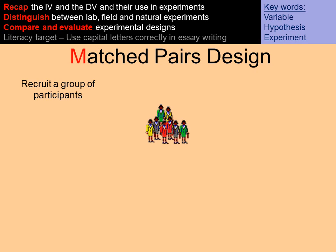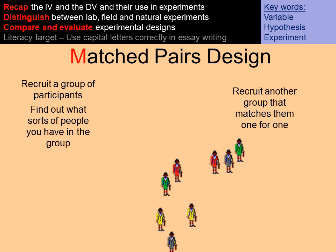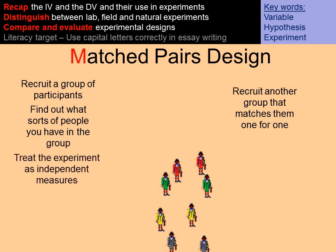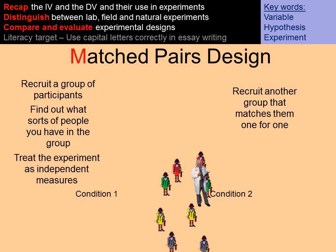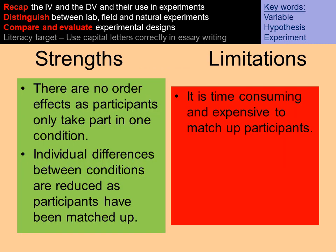The last design is matched pairs. You recruit a group of participants, assess their characteristics, then recruit another group and match them to your original group — this might be for IQ, age, or gender. You then assign one matched group to condition one and the other to condition two and compare results. This is good because there are no order effects since each participant only takes part in one condition, and individual differences are controlled through matching. For example, if participant one has an IQ of 79, the matched participant in condition two will also have an IQ of 79, ensuring intelligence isn't a confounding variable. However, matching participants can be very time-consuming and expensive.